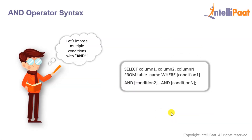Now let's have a look at the syntax. After we give the first condition in the WHERE clause, we follow it up with the AND operator and give the second condition. Similarly, if we have another condition to be satisfied, we again give the AND operator and then provide the next condition.